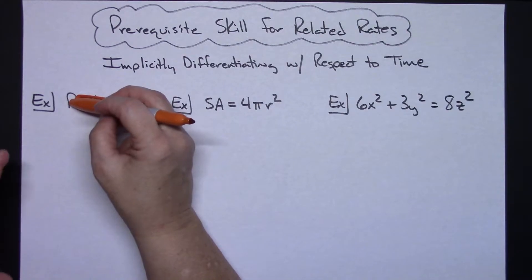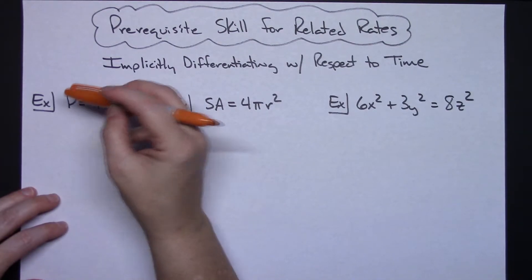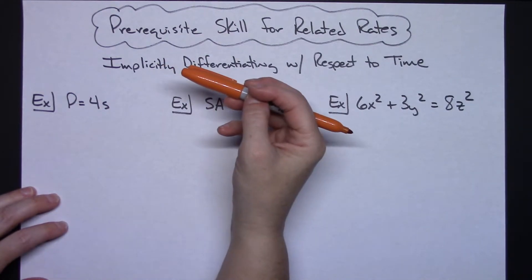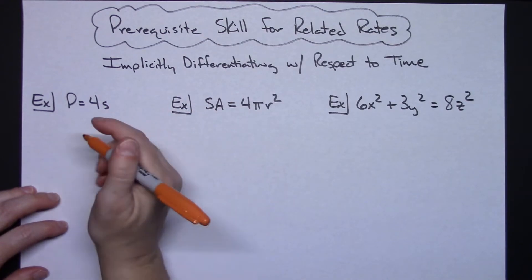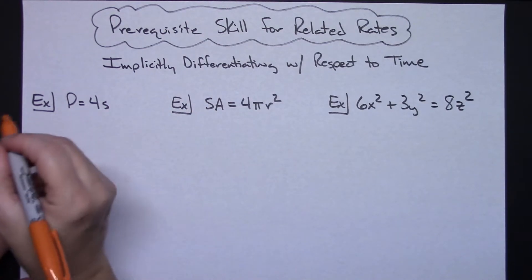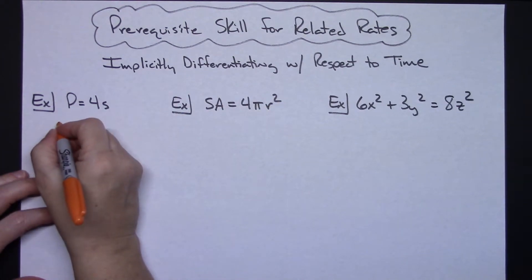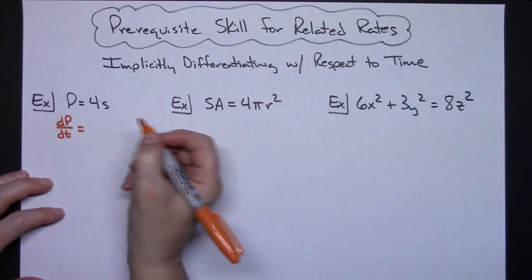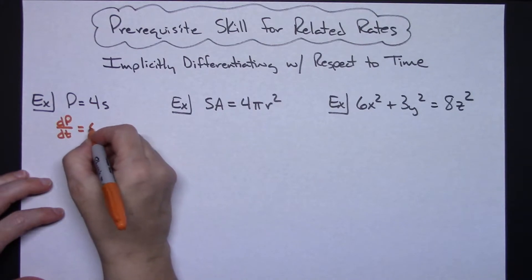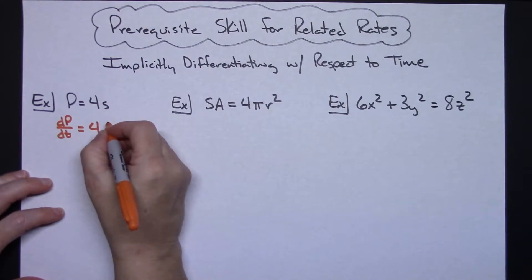So my P, if I differentiate P I'm going to get one and then I've got to include my chain. Implicit differentiation includes a chain, so it's one, and I'm not going to put the one down because we don't need that. I need it with respect to time, so then dP/dt is equal to 4 and then ds/dt.